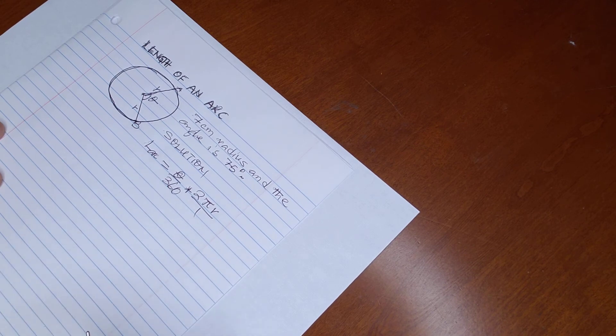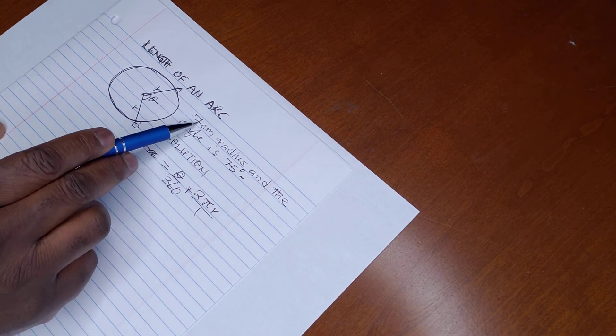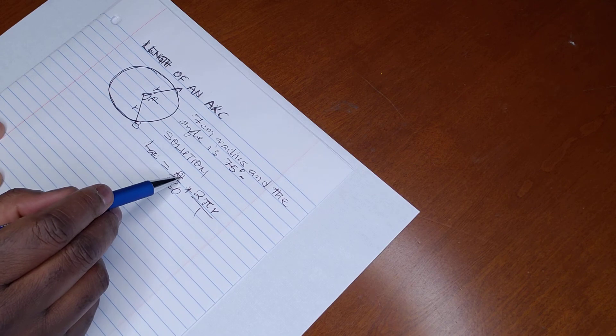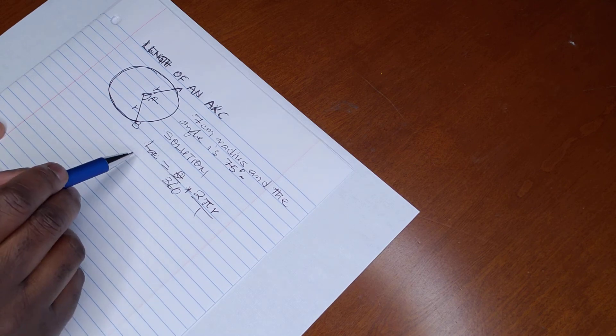So all we need to do in this case is plug in the numbers, which means we substitute the values that are given to us: 7 for the radius and theta for the angle, to obtain the length of an arc.